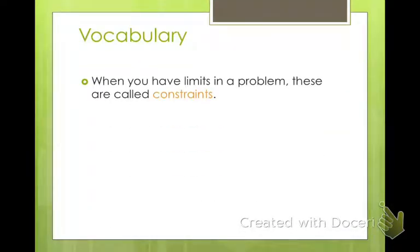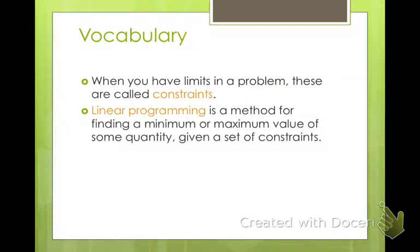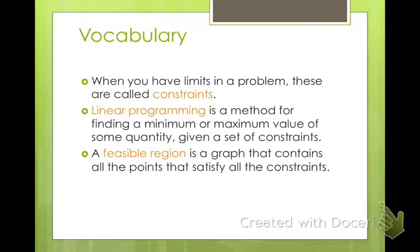So vocabulary. When you have limits in a problem, these are called our constraints because they set boundaries. Linear programming is a method for finding a minimum or a maximum value based on these constraints. And then the feasible region is that area, that shaded, that satisfies all the constraints. Usually it's going to be in some shape like a square or a triangle or a trapezoid or something like that.